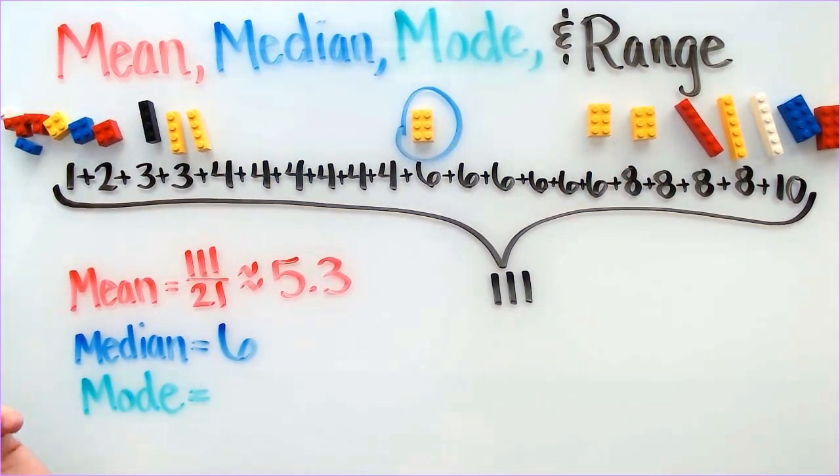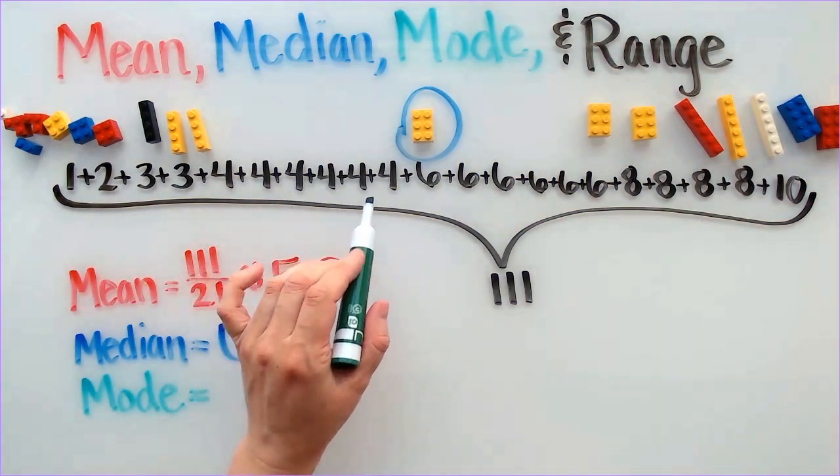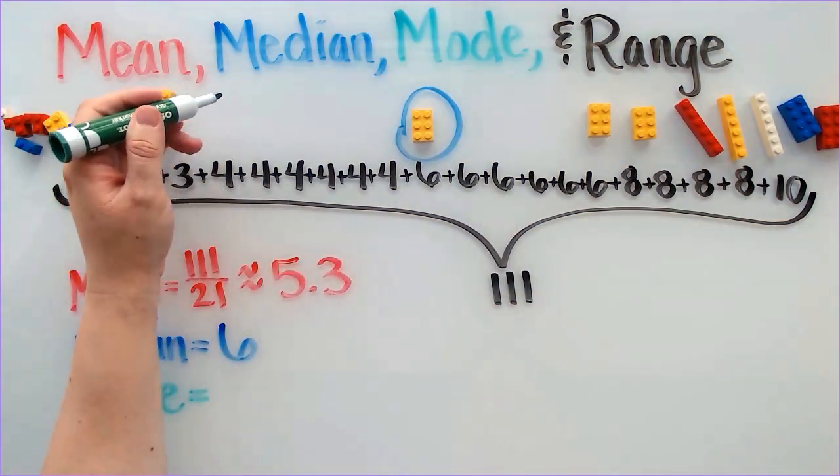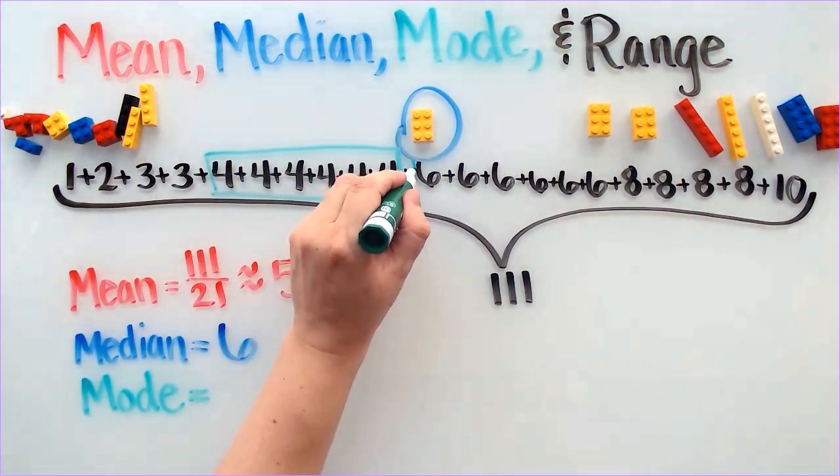In this problem, I have two modes. I can see that 4 and 6 both occur 6 times. This means that my mode is both 4 and 6.